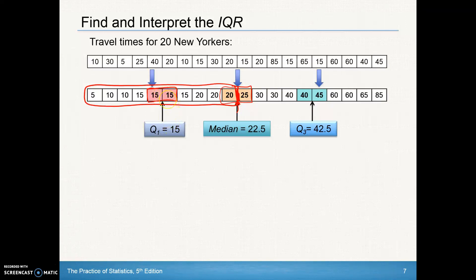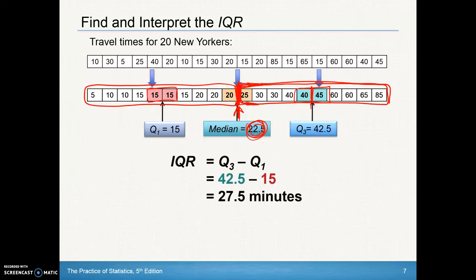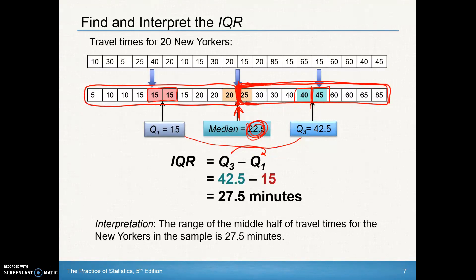The bottom half has 10 data points with two numbers in the middle. The middle between 15 and 15 is simply 15. For the upper half from 25 through 85, we have two values in the middle, so we find the mean of these two values, which is 42.5. Don't use the median 22.5 as a data point in calculating Q1 and Q3. To find the IQR, subtract Q3 minus Q1 to get 27.5 minutes. The interpretation is: the range of the middle half of travel times for New Yorkers in the sample is 27.5 minutes.